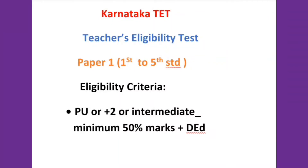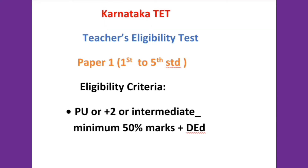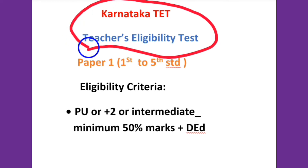Hi, hello friends, welcome back to my channel. Are you aware that even a Bachelor in Education candidate can also apply for TET Paper 1? So let us check out the eligibility criteria for TET. What is TET? It is Teachers Eligibility Test. If you are an aspirant preparing for competitive exams to appear for teacher post recruitment, you must watch this to know the eligibility criteria for TET and who can apply for Paper 1 and Paper 2 throughout Karnataka.